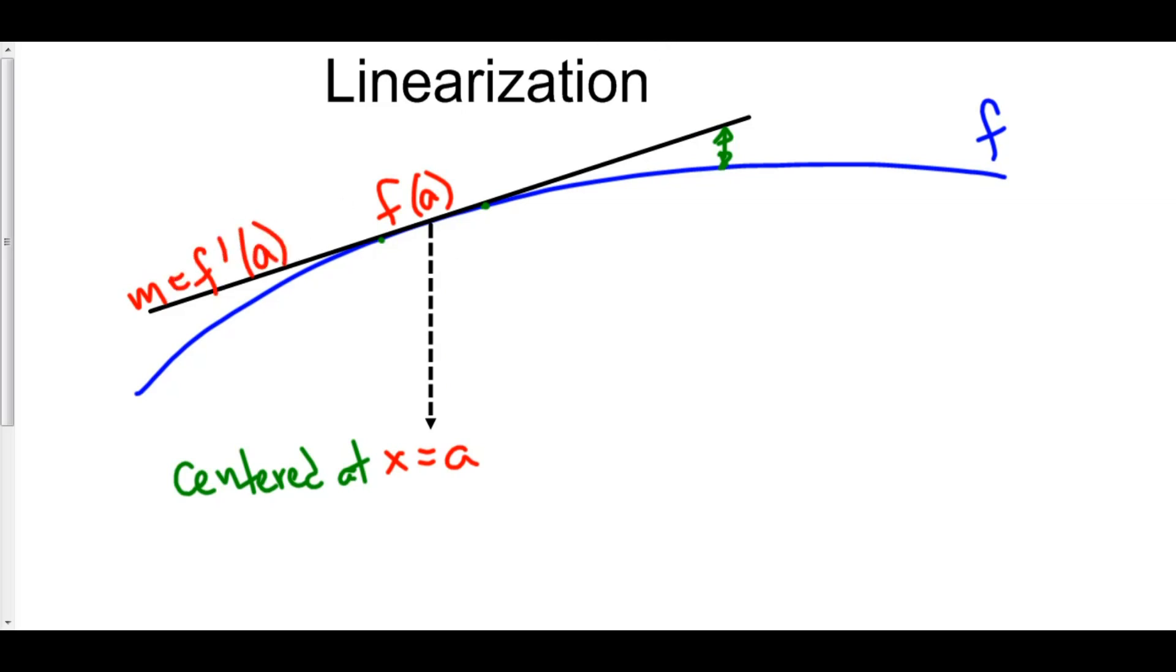Then using point slope form, we have y minus our y1, which is f of a, is equal to the slope, m, which is f prime of a, times x minus the x value, which is just a.